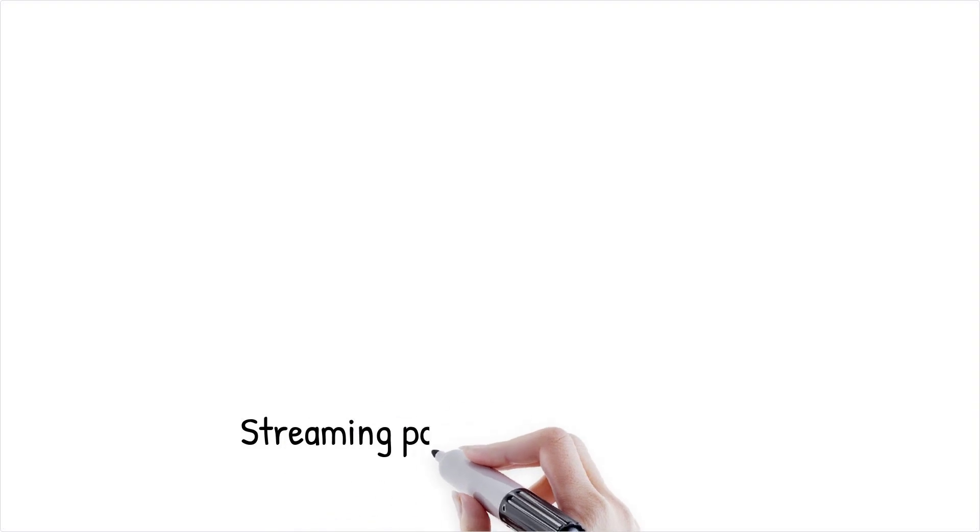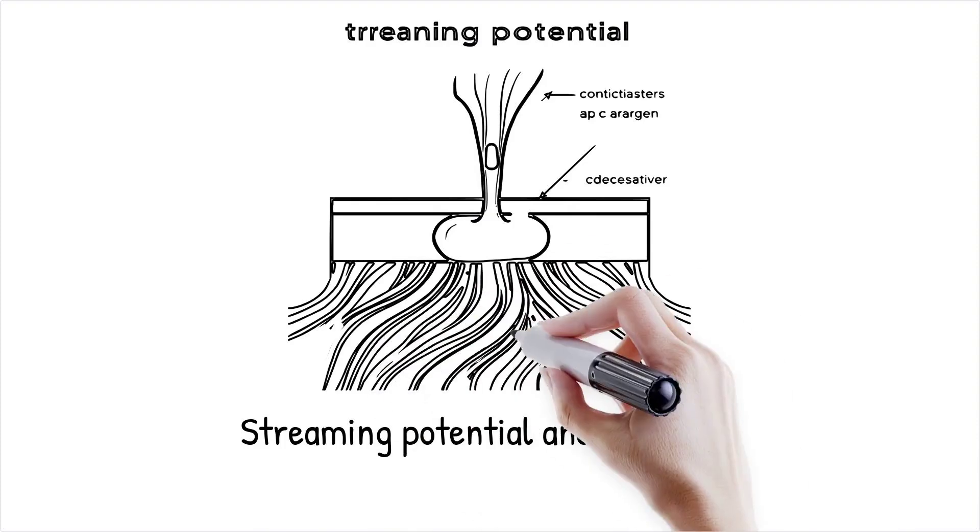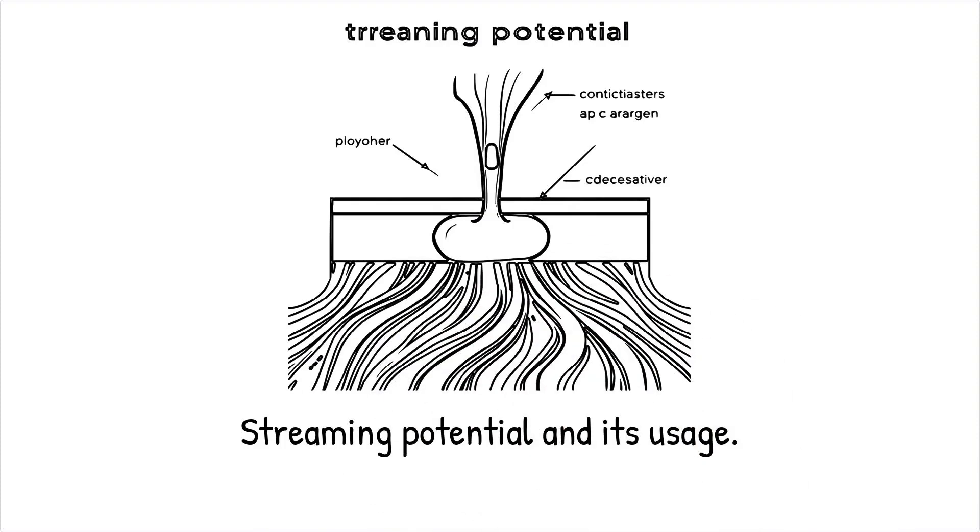Streaming potential: electric potential arises when fluid flows through charged channels, displacing ions in the EDL. Applications include flow sensing and surface charge characterization.